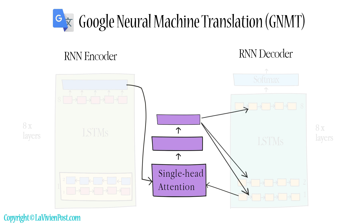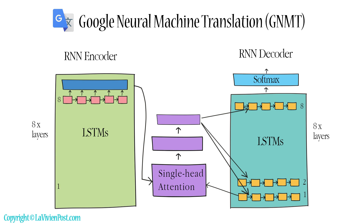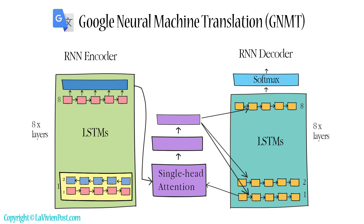The addition of an attentional mechanism overcame the short memory problem of RNN. The Google team also made other tweaks in their NMT, such as adding one layer of bidirectional LSTM, residual connections, and beam search. All these changes greatly improved the performance of GNMT.